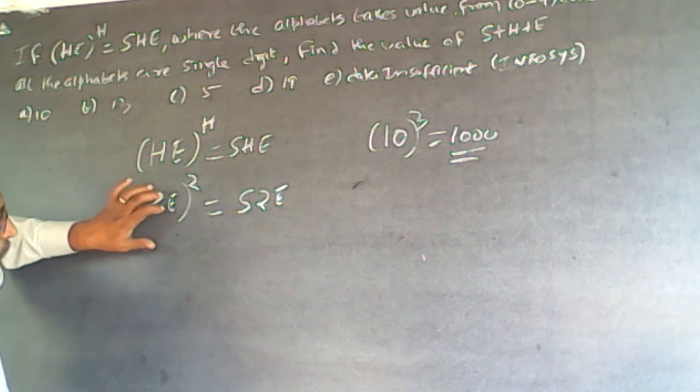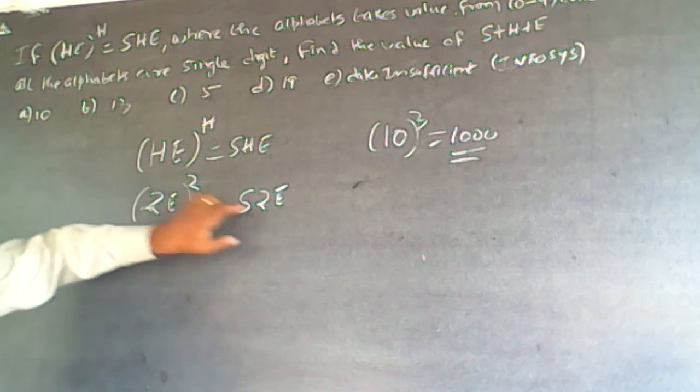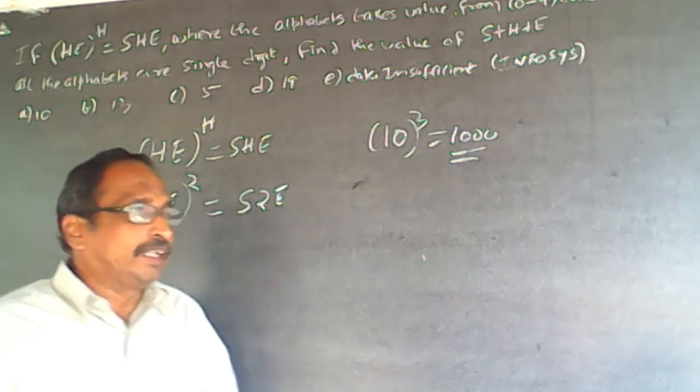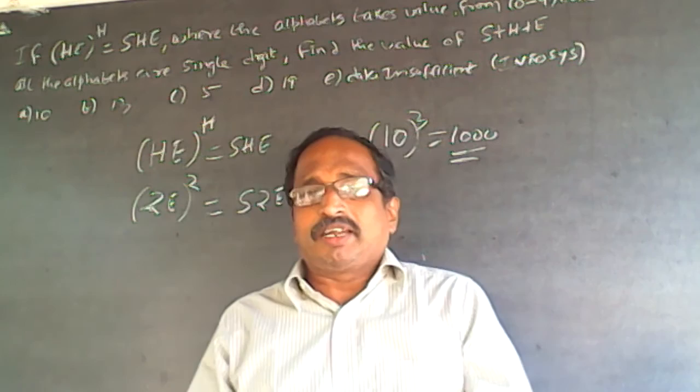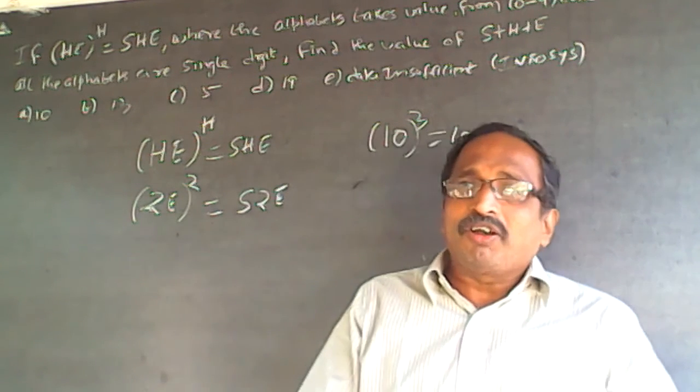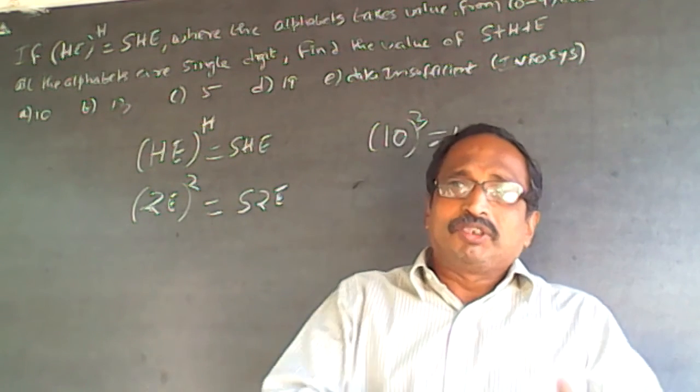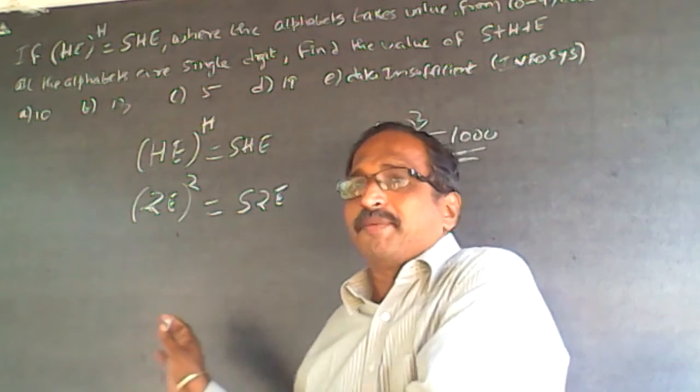So when I multiply a square, E into E is E. See, we have got only 9 digits or 10 digits from 0 to 9. So you have to find out for which numbers the square number will have the same ending number.